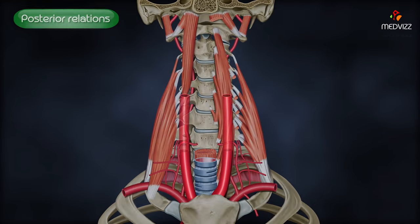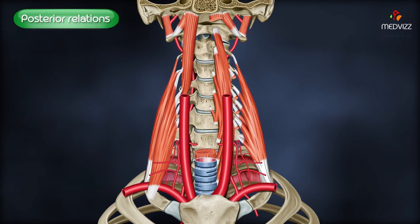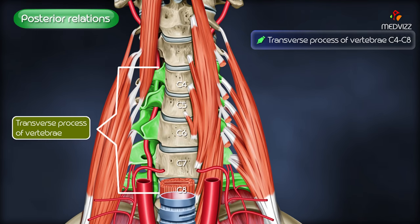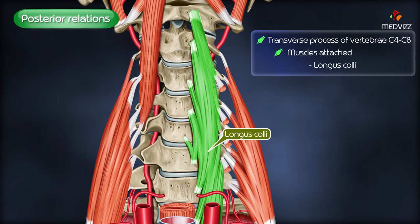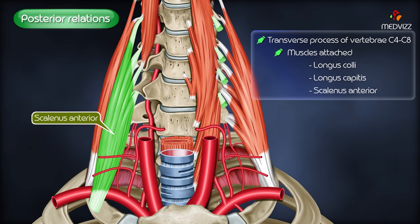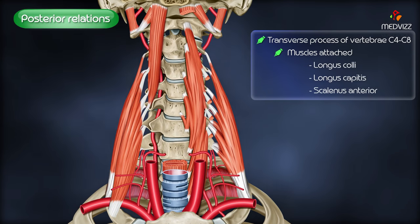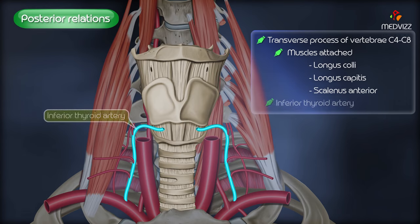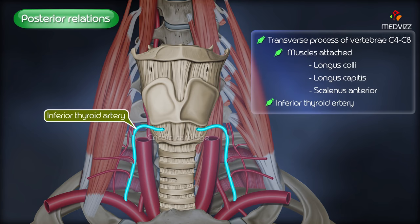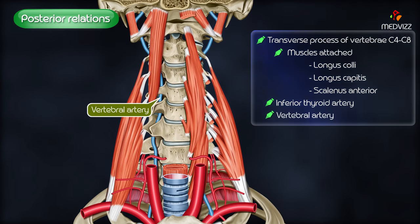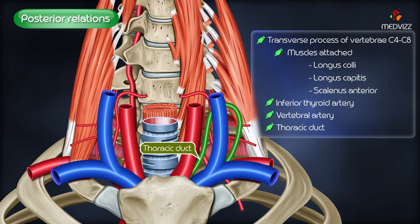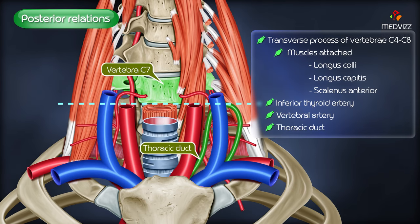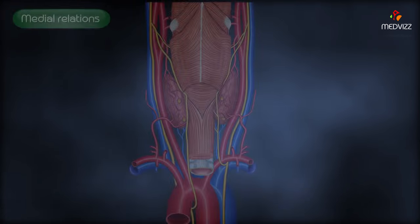The posterior relations include the transverse processes of vertebrae C4 to C8 and the muscles attached to their anterior tubercle, such as longus colli, longus capitis, and scalenus anterior. Another important posteriorly related structure is the inferior thyroid artery, which crosses medially at the level of the cricoid cartilage. The vertebral artery is also posterior, and on the left side, the thoracic duct crosses laterally behind the artery at the level of the C7 vertebra, in front of the vertebral vessels.